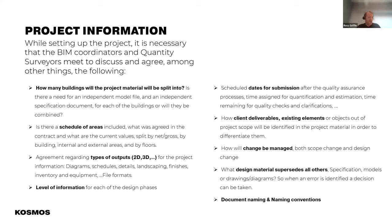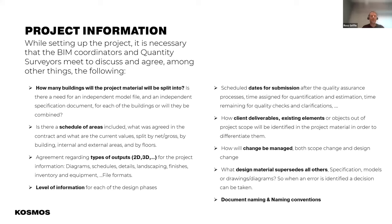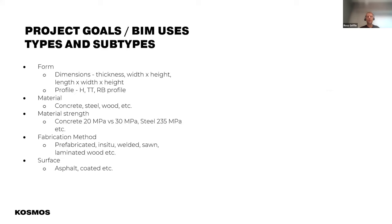How will change be managed within the models? Traditionally we would cloud drawings, but it's different within models. We need to understand how change is going to be managed, both from a design and scope perspective. Design material supersedes all others. A lot of companies are anxious about giving models out, especially during procurement and tender. But if we clearly define what the model is for and what documentation hierarchy exists, from our perspective the model is just for information only. It's still contractually required to deliver drawings and specifications, but that should be defined so everybody's clear. Finally, document naming conventions — ISO 19650 will define that for the Irish market, but it needs to be agreed with the client and be part of the BIM execution plan.